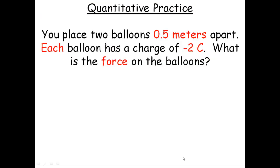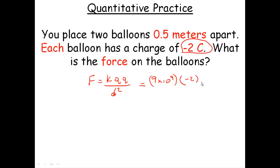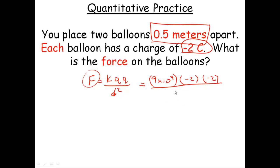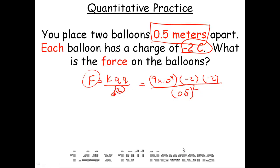Lastly, let's do a quantitative example. Our law is: F = k × q1 × q2 over the distance squared. Don't forget that k is 9 times 10 to the 9th. If you place two balloons a half a meter apart, each balloon has a charge of negative two. You're probably wondering about that negative sign — it's not all that important for what we do. It just tells you if these things are going to attract or repel. If you get a positive force, they're repulsive; if you get a negative force, they are attractive. The distance is 0.5, squared. When you put that through your calculator, it's 1.44 times 10 to the 11 Newtons.